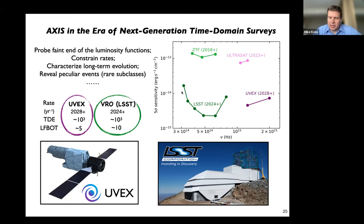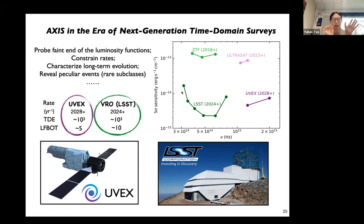Daiichi Hiramatsu asked: what sets the lower limit of 10 to the 5 solar masses for the black hole mass that can be probed in TDEs? That lower limit requires that the stellar radius be less than the event horizon of the black hole; otherwise the black hole will enter the star before disrupting it. The 10 to the 5 figure is based on a solar-type star. For even less massive stars like M-type dwarfs, the lower limit will be even smaller. So the full range from 10 to the 5 to 10 to the 8 is for a sun-like star.